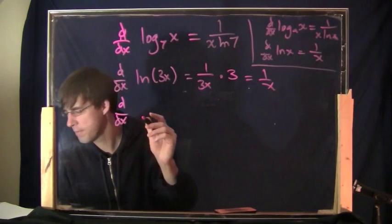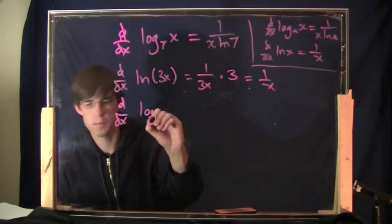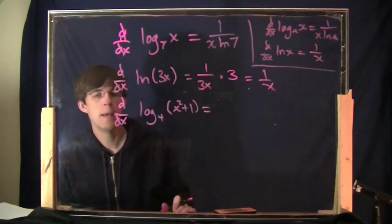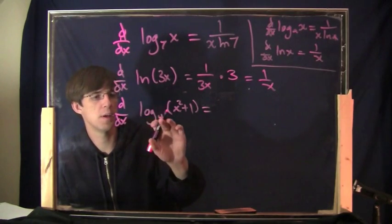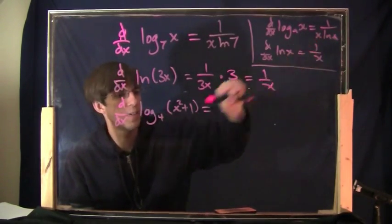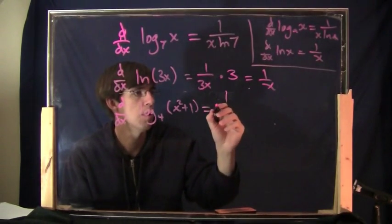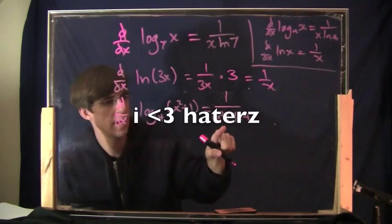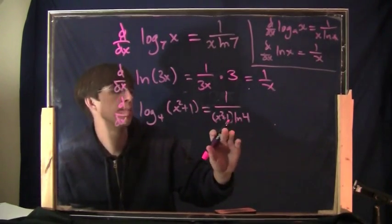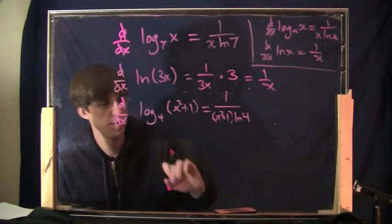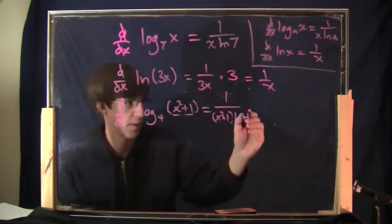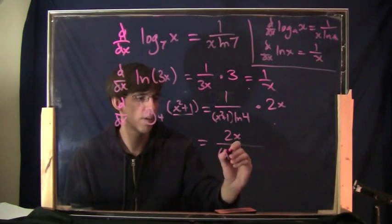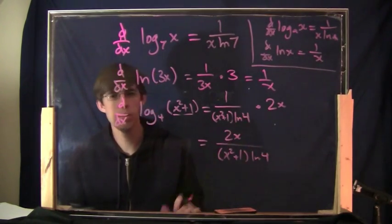Let's try another one: the derivative of log base 4 of x squared plus 1. Again, we have to use the chain rule because of the weird thing on the inside, but it's log base 4, so I use this formula where x is replaced by x squared plus 1. It's going to be 1 over (x squared plus 1) times ln of 4, because a is 4. Then because of the chain rule, I separately multiply by the derivative of the inside, which is 2x. You can make this a single fraction: 2x over (x squared plus 1) times natural log of 4.